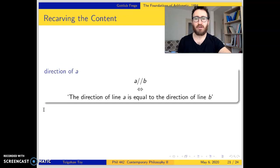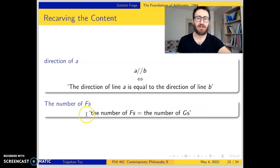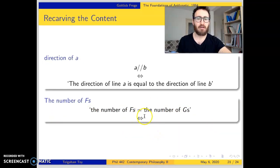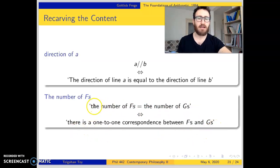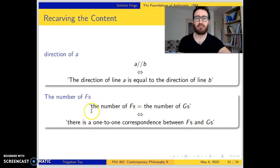Frege used the same strategy for number terms. 'The number of F's' takes place in the numerical equation 'the number of F's is identical to the number of G's.' Since this equation is epistemologically less accessible, we use a biconditional form to get its conceptual content. These two sentences have the same conceptual content: 'the number of F's is identical to the number of G's if and only if there is a one-to-one correspondence between F's and G's.' We use the meaning of the more accessible one to obtain the sense of 'the number of F's.' This is re-carving the content.